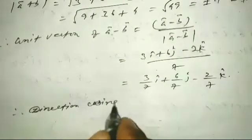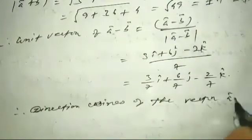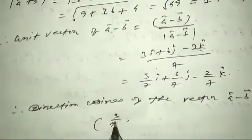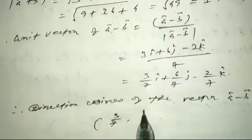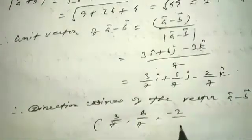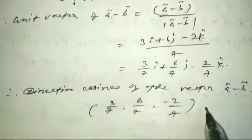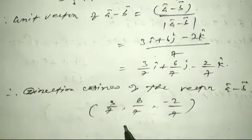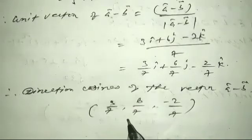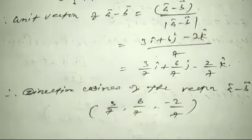Therefore the direction cosines of the vector a plus b are (3/7, 6/7, minus 2/7). This is the answer. Questions 18 to 22 will be covered next — please like or comment if you need that content.